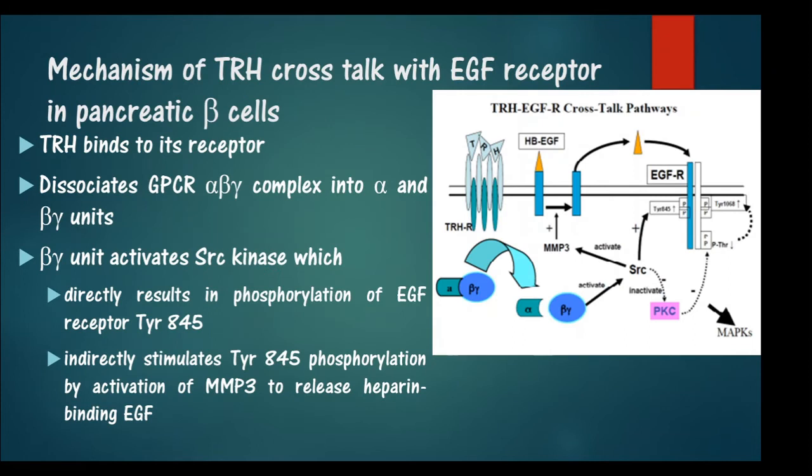TRH appears to couple to Gi2 and Gi3 and does not activate adenylyl cyclase or produce cyclic AMP. One example is the crosstalk of TRH with the EGF receptor in pancreatic beta cells, where TRH binds to its receptor and dissociates the G protein-coupled receptor alpha-beta-gamma complex into alpha and beta-gamma units.